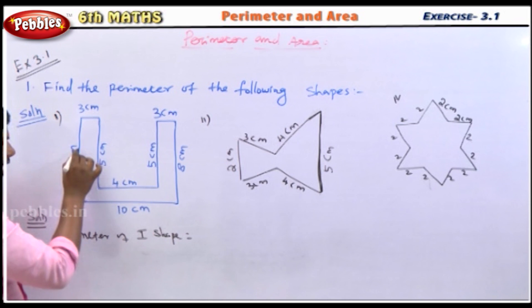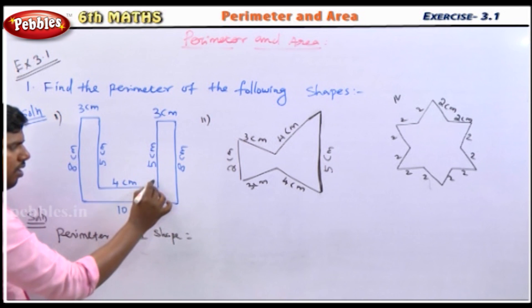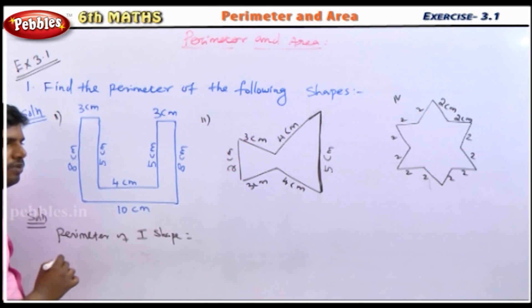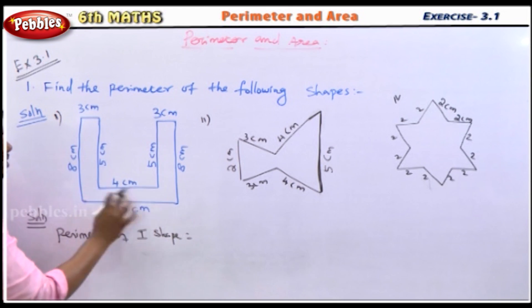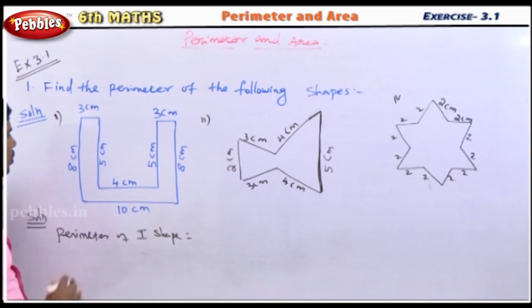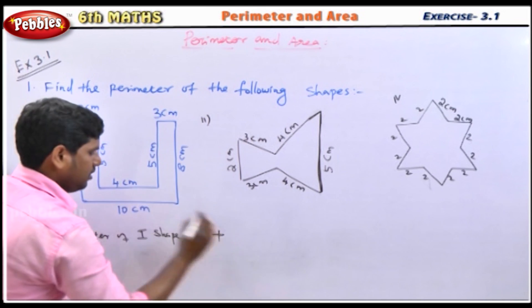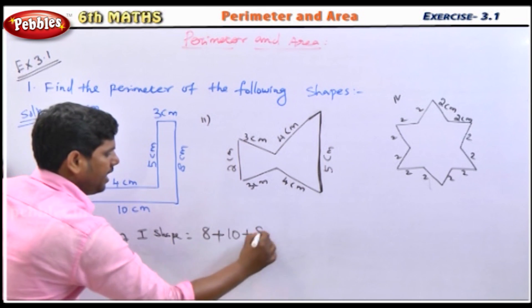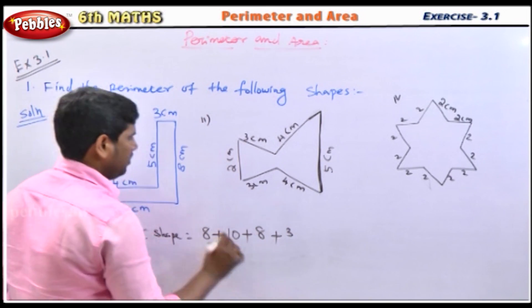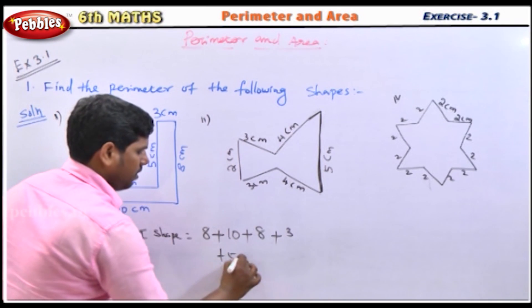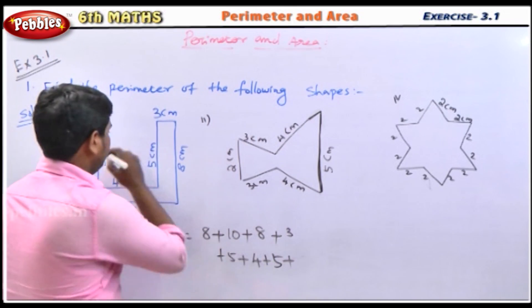Let's start with the first shape. The side measurements are: 8, 10, 8, 3, 5, 4, 5, 3. So we add up all the measurements of the perimeter.